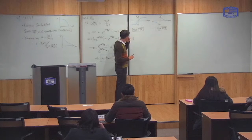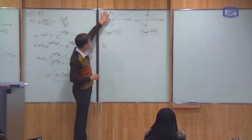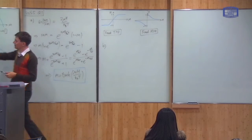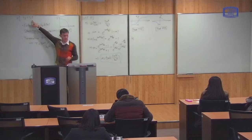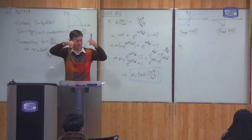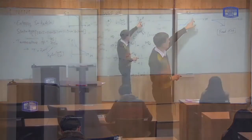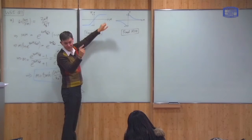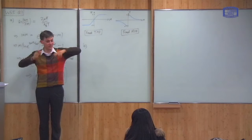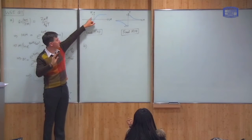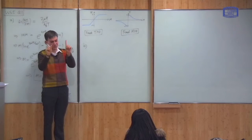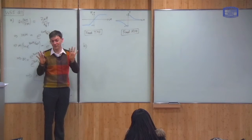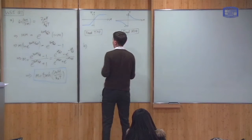Some interesting things to note: if H equals zero then the magnetization is zero. This makes sense — if there's no field, the spins are just random, half pointing up and half pointing down. As I increase the field, more and more spins start to point up, which is what you'd expect. If I make the field very strong, virtually all the spins point up in the same direction as the field.